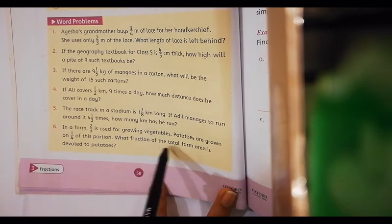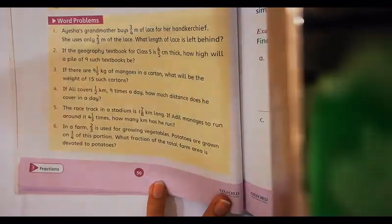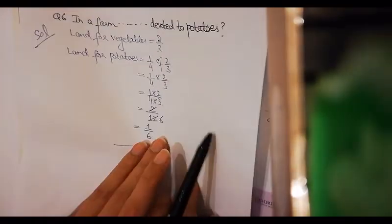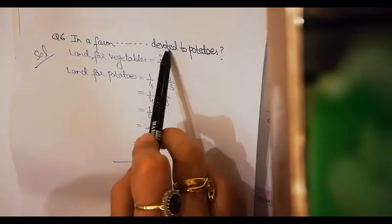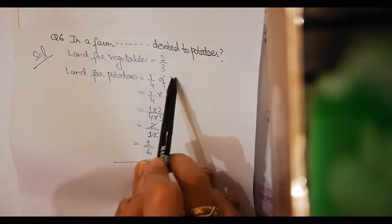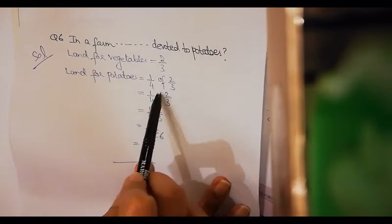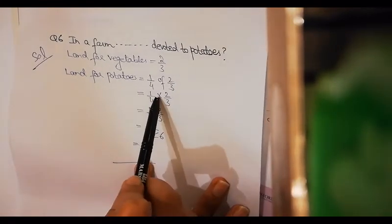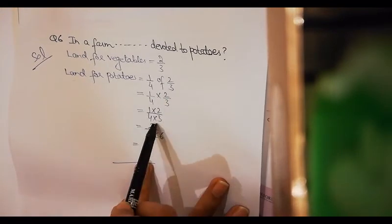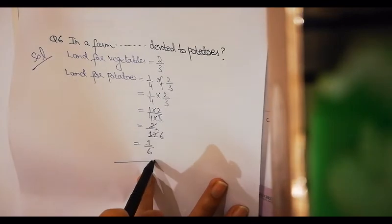Look at here. Land for vegetables is given as 2/3. Land for potatoes is given as 1/4 of 2/3. 1/4 of 2/3 means that I have to multiply both values. 1/4 multiplied by 2/3. 1 multiplied by 2 divided by 4 multiplied by 3 equals 2/12. 2 and 12 can be simplified, so 1/6 is your answer.